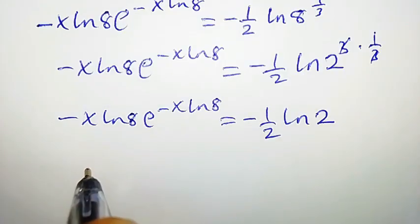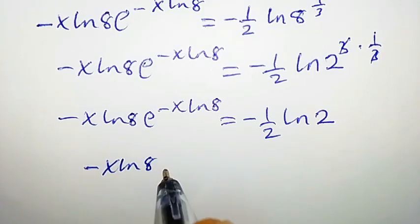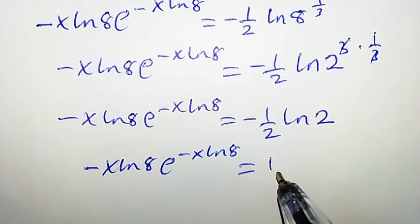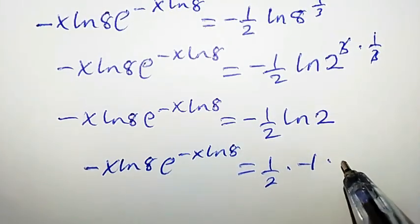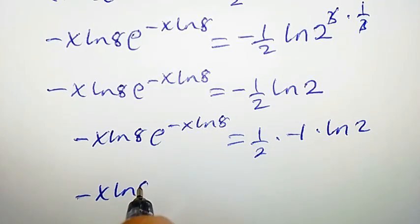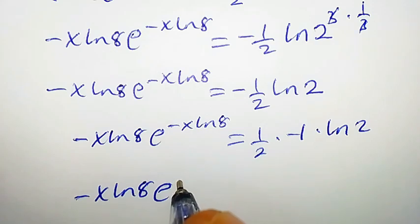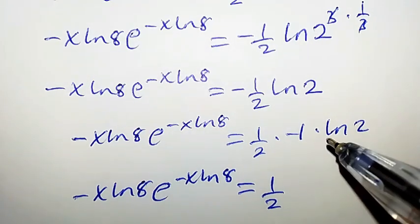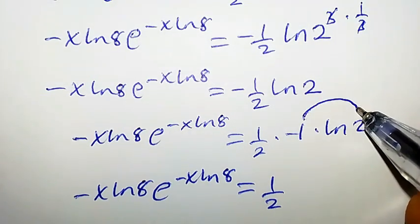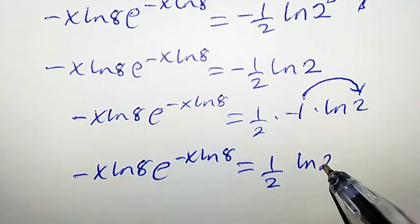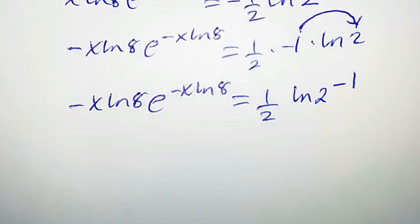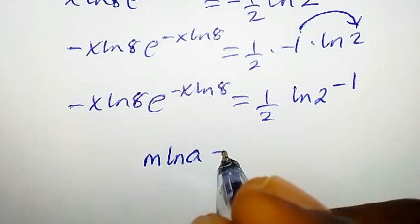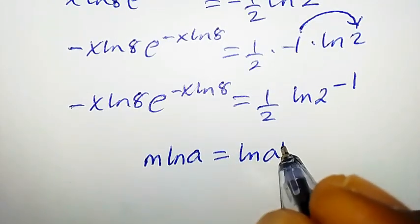So we have negative x ln 8 times e to the power of negative x ln 8 equal to negative 1 over 2 times ln 2. We can write negative 1 over 2 as 1 over 2 times negative 1, and by the logarithm rule m times ln a equals ln a to the power of m, this becomes ln 2 to the power of negative 1, which equals ln(1/2).